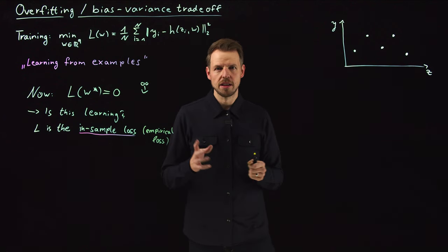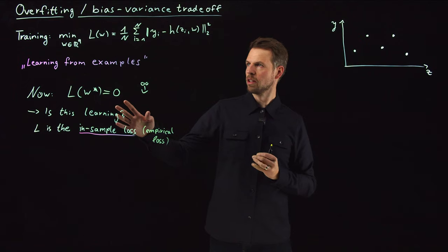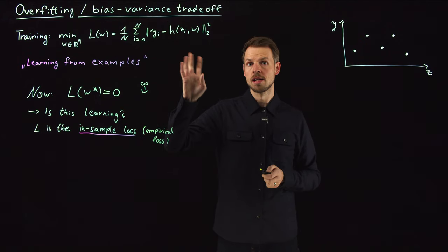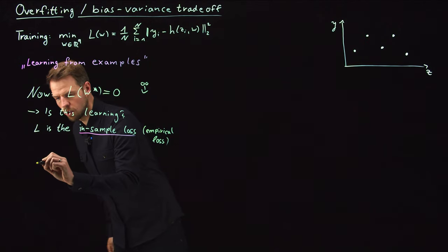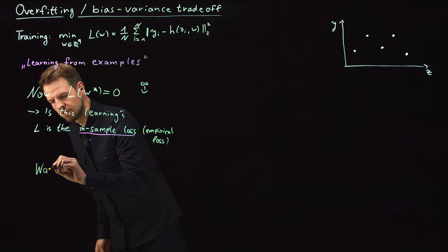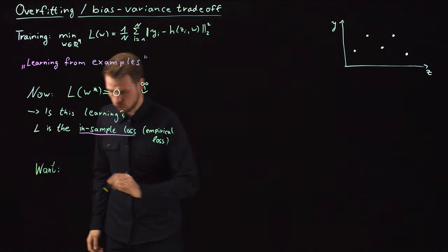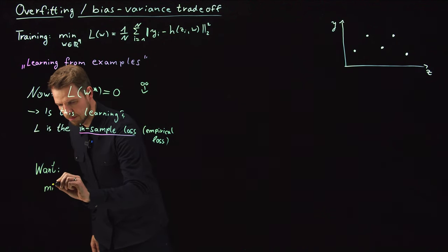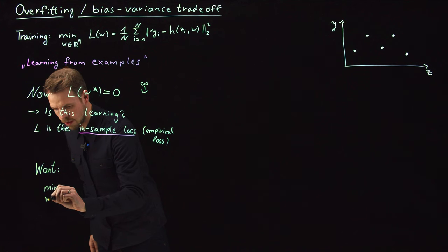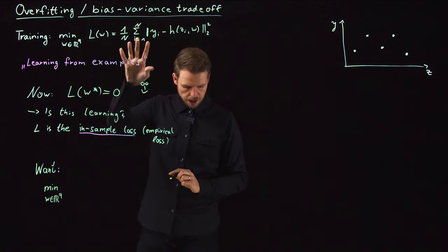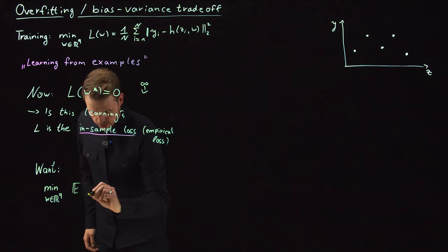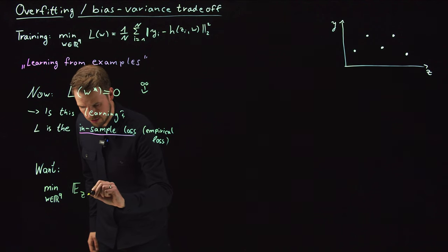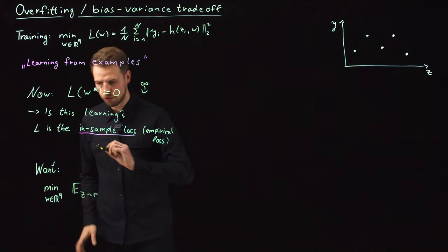But what we are actually after, if we talk about learning, is a good behavior in terms of having a small loss out of sample - on data that we have never seen before. What we want is to minimize weights, but now not in our sample, but the expected value when we draw our samples according to some probability distribution.